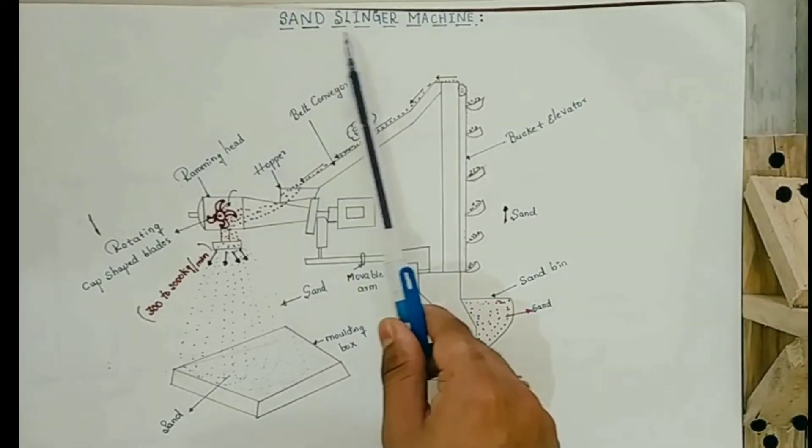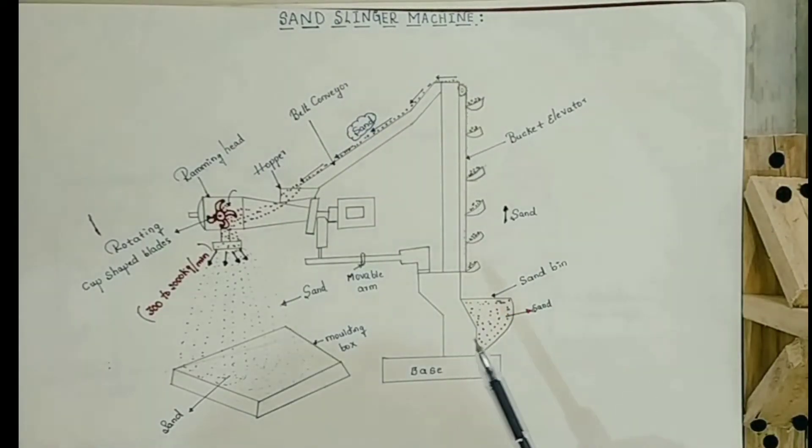So, today I am going to explain about Sand Slinger Machine. Sand Slinger Machine is nothing but ramming of the sand within the moulded box with the help of rotating blades.